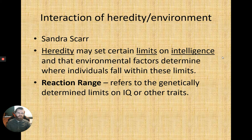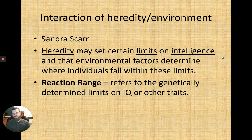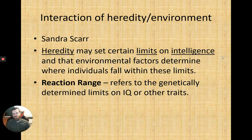The reaction range concept, from Sandra Scarr, proposes that heredity sets limits on intelligence and environmental factors determine where we fall within those limits. The idea is that our IQ has been genetically determined to have a range, and our environment helps us determine where within that range we end up.